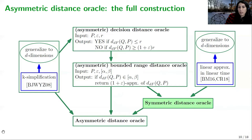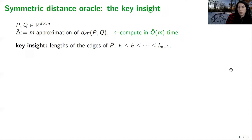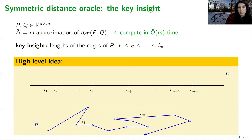The most interesting component is the symmetric oracle. Assume that p and q are both of length m. We begin by computing a rough estimation delta-tilde of the distance using the approximation algorithm in linear time, and based on this estimation we decide what to do next. We need to compare it to some property of the input curve p, and the key insight is to consider the lengths of the edges of p.